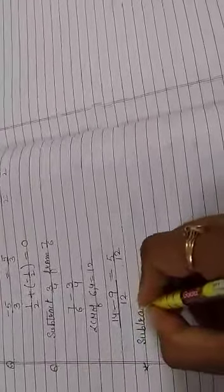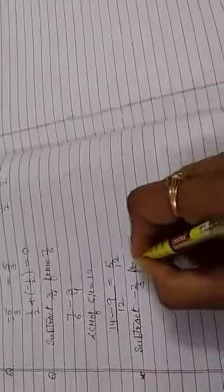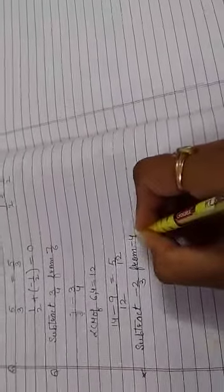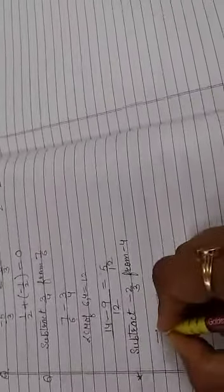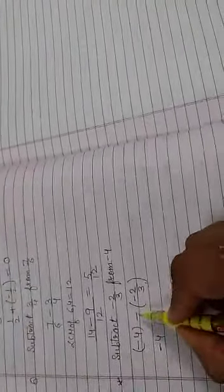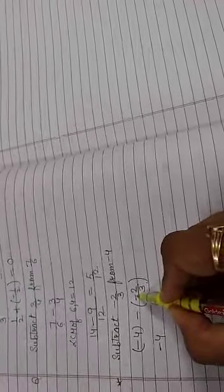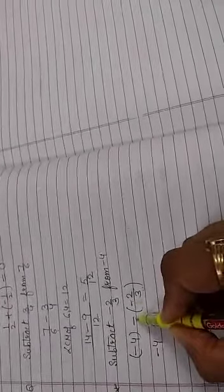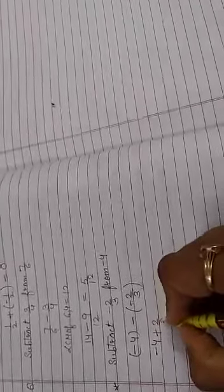Subtract minus 2 upon 3 from minus 4. It means minus 4 minus minus 2 upon 3. Minus 4 minus and minus. When we have 2 subtraction signs continuously, it becomes plus. Minus and minus plus, 2 upon 3.